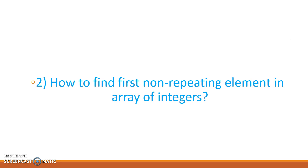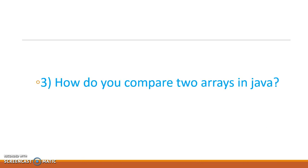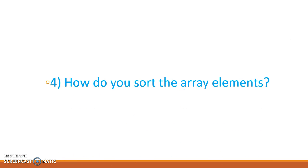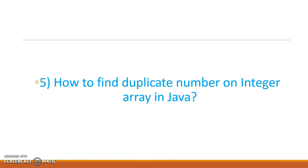Third: how do you compare two arrays? Suppose I have five elements in the first array and five elements in the second array with the same content — how do you check whether two arrays are equal? Fourth: how do you sort array elements?